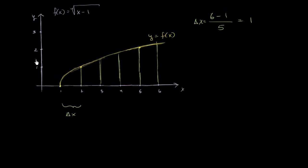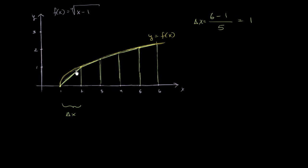So let's set up our trapezoids. The first trapezoid is actually going to be a triangle — a trapezoid where one of the sides has length 0. Then the second, third, fourth, and fifth trapezoids follow. Let's calculate the area of each of these, and then we'll have our approximation for the area under the curve.